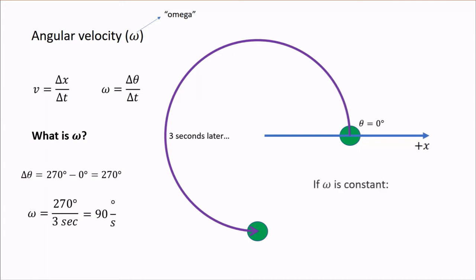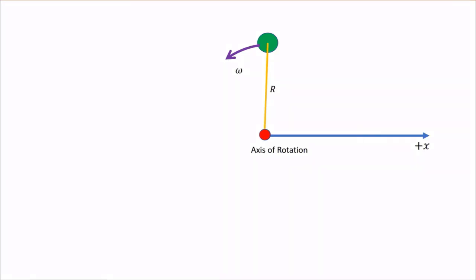If the angular velocity is constant, we can write this simple formula: the change in angular position is the angular velocity multiplied by the time passed. This is very similar to the linear equation where the change in position equals the velocity multiplied by the time passed. As an object rotates with a certain angular velocity, it also has a tangential velocity. The tangential velocity equals the angular velocity times the radius of the rotation, which is the distance between the object and the point around which it is rotating.